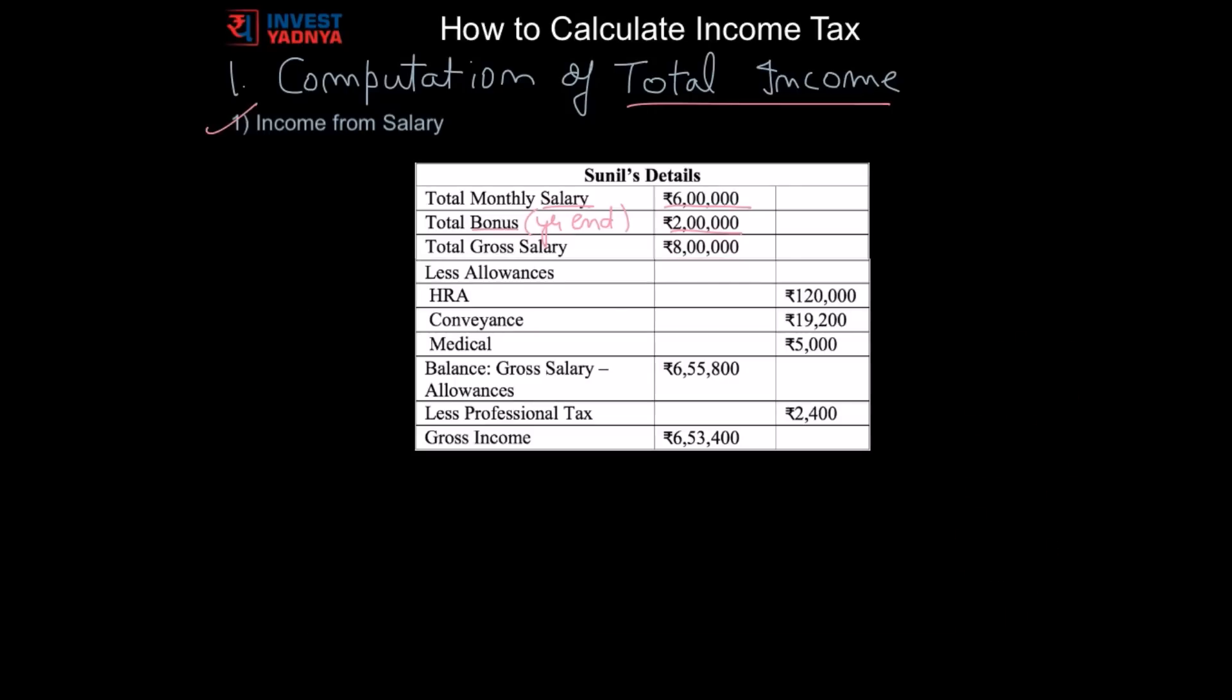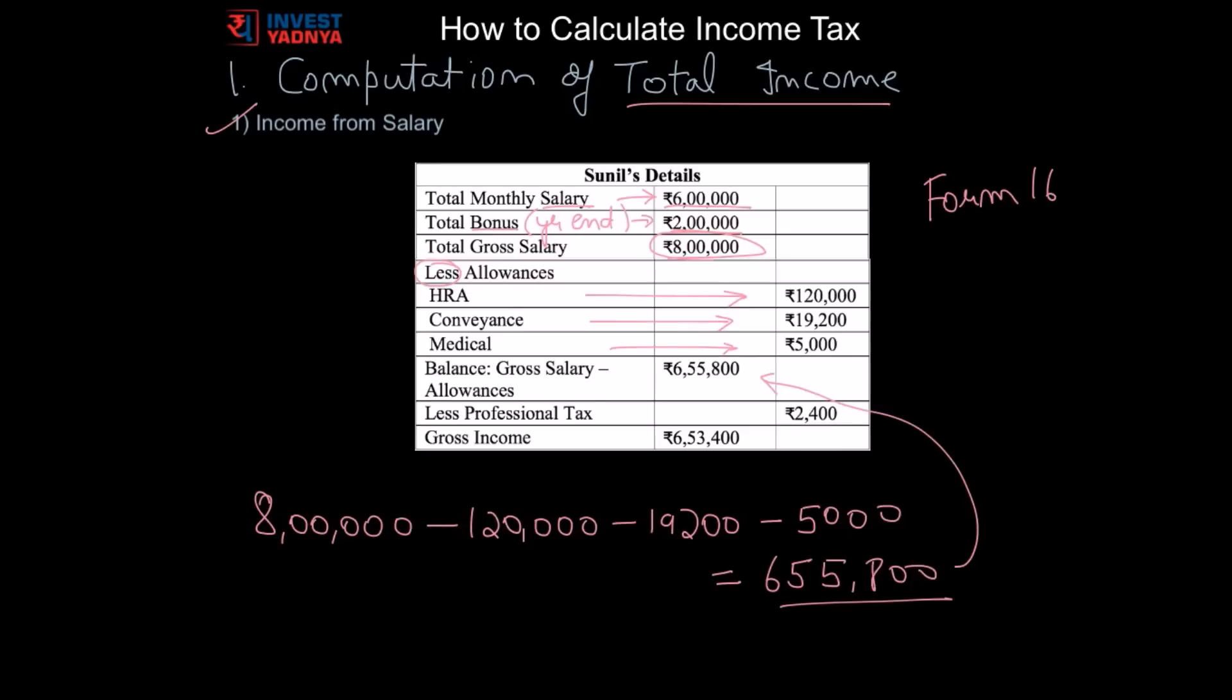So this is how we can calculate his gross income which will be put under salary head. Remember all these details would be part of Sunil's form 16 as well. So this is his total monthly salary plus bonus and this becomes his gross salary. Then we need to reduce the allowances he got: HRA, conveyance and medical. So this becomes his balance gross salary. Here we also reduce the professional tax which is a state specific tax. So after reducing we got gross income which will be Sunil's income from salary for income tax calculations.